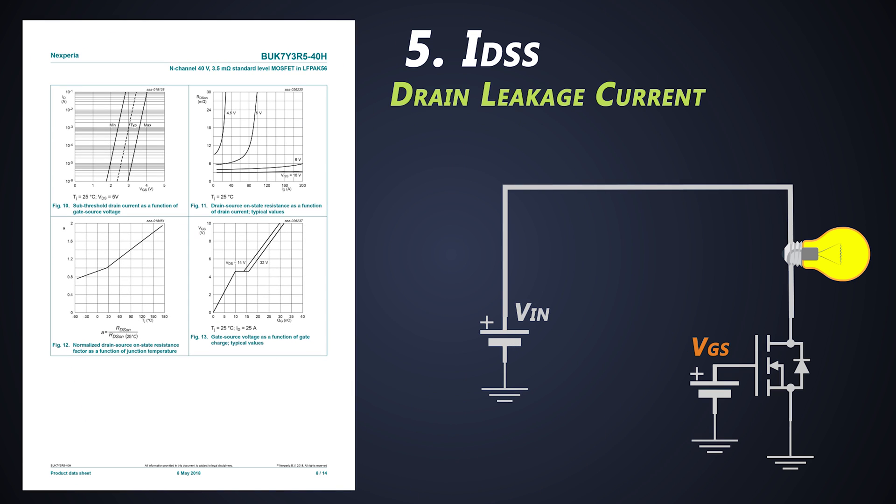Next coming up is drain leakage current. This is also a drain to source current when VGS is 0V that means when the MOSFET is turned off. Even if we don't give any gate voltage signal to the MOSFET, still this fellow allows some small amount of current to flow through it. We can call it a leakage current. This leakage current should be as small as possible.